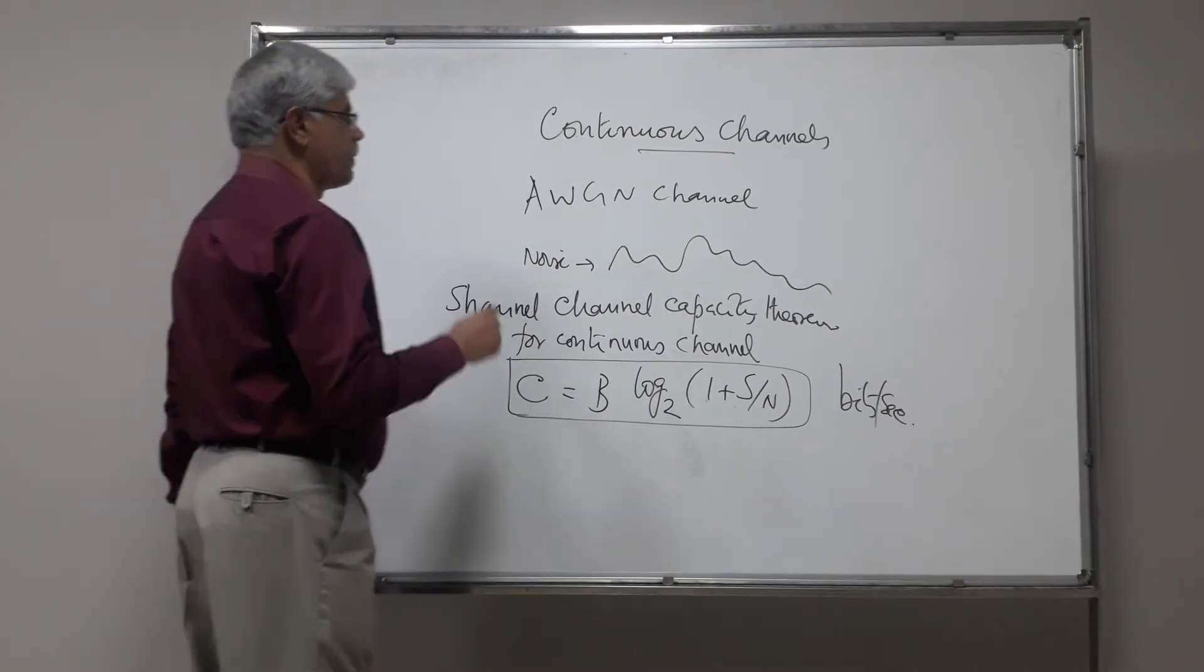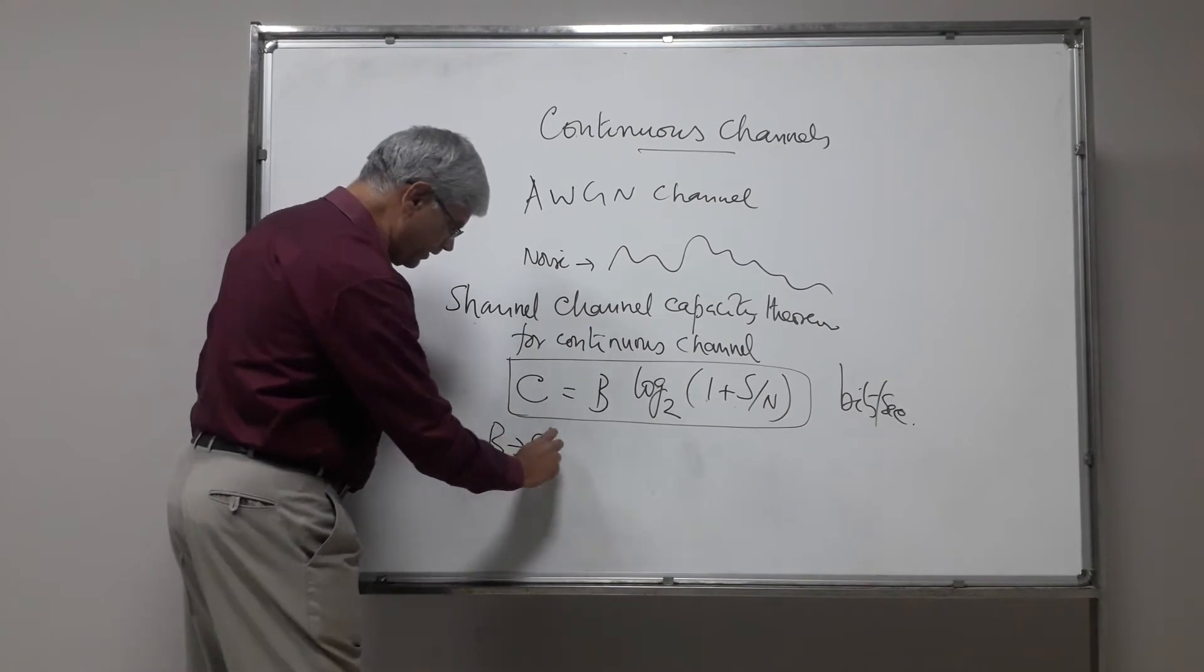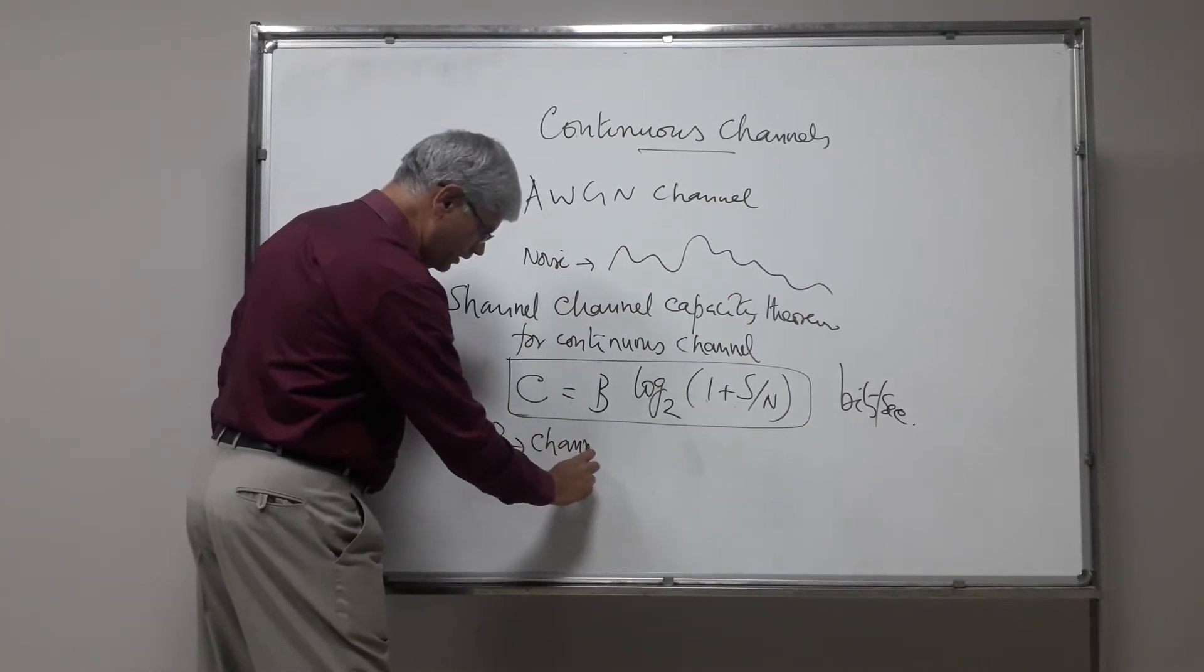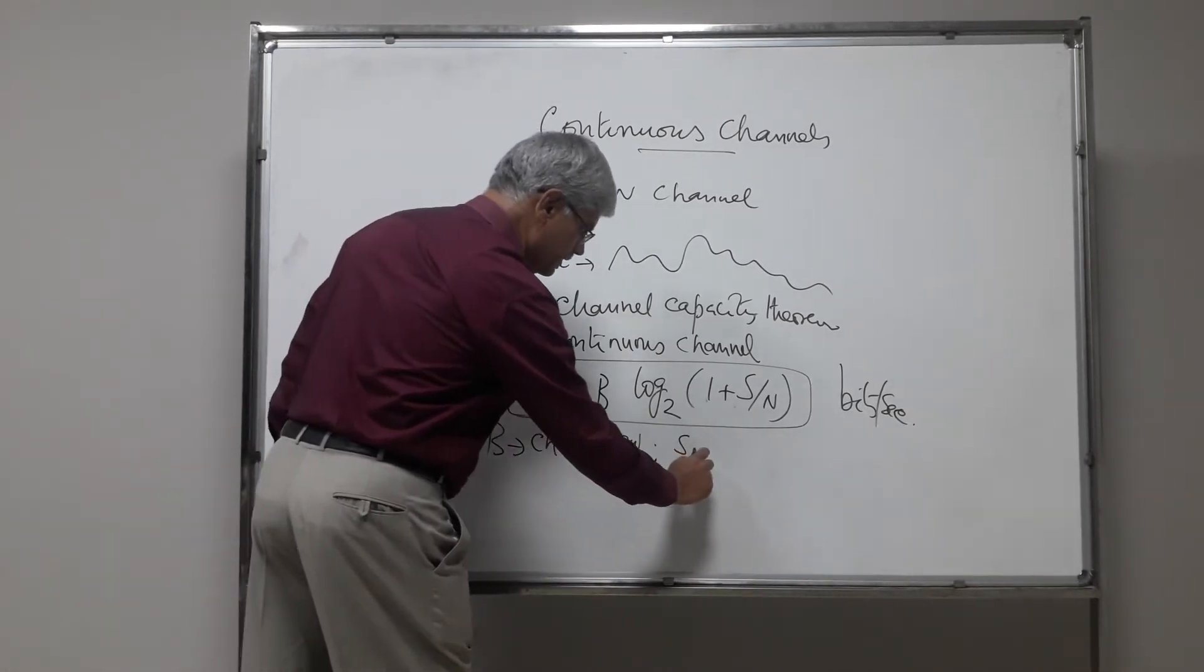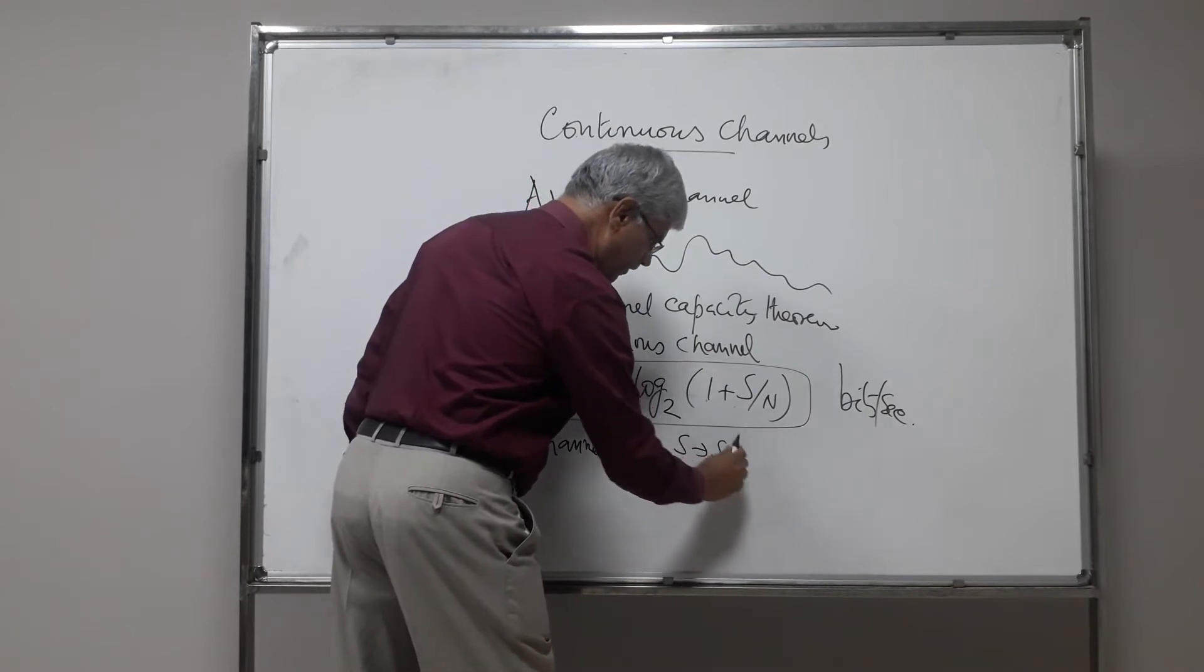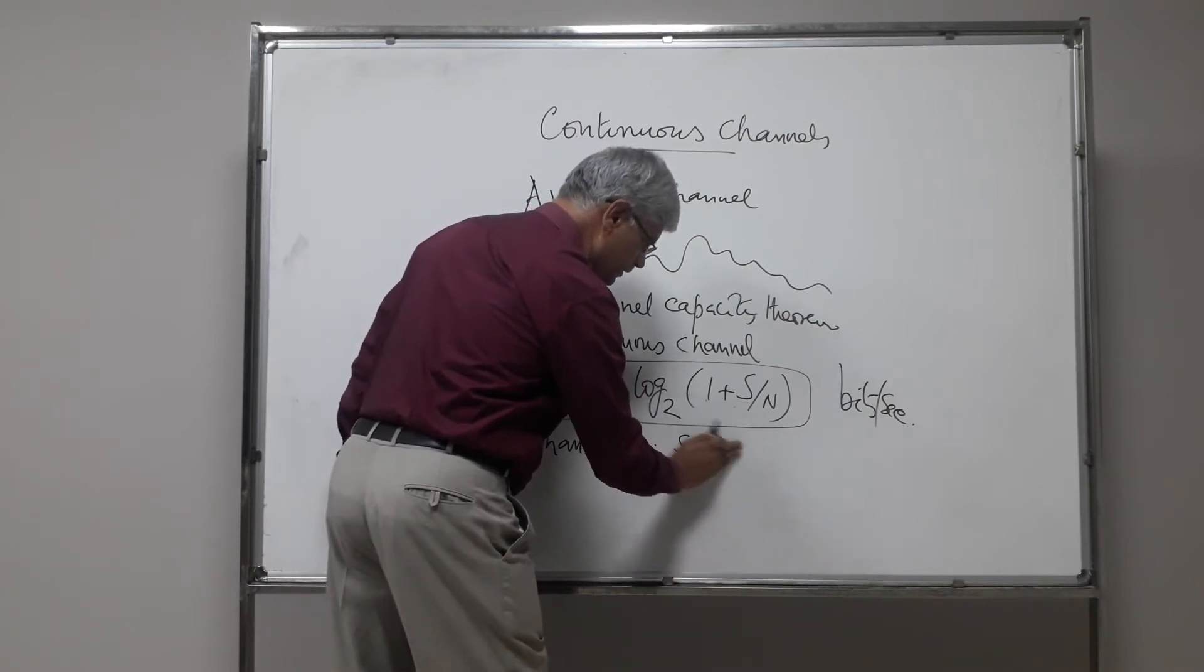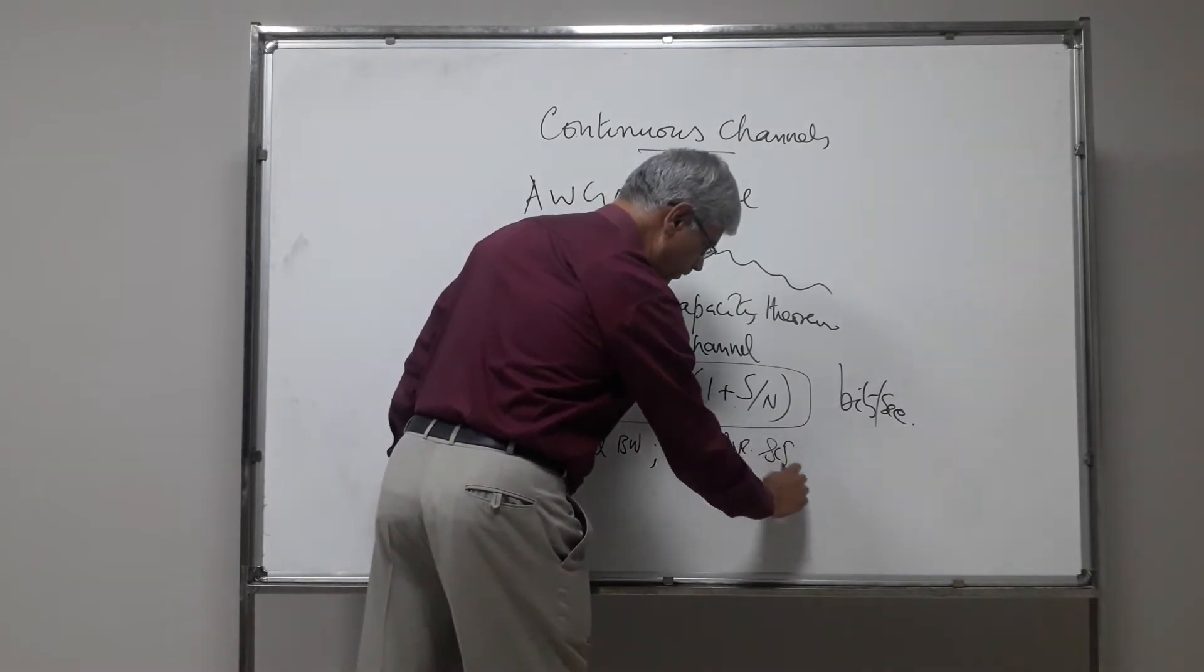Here, B is the channel bandwidth, and S is the signal power, average signal power.